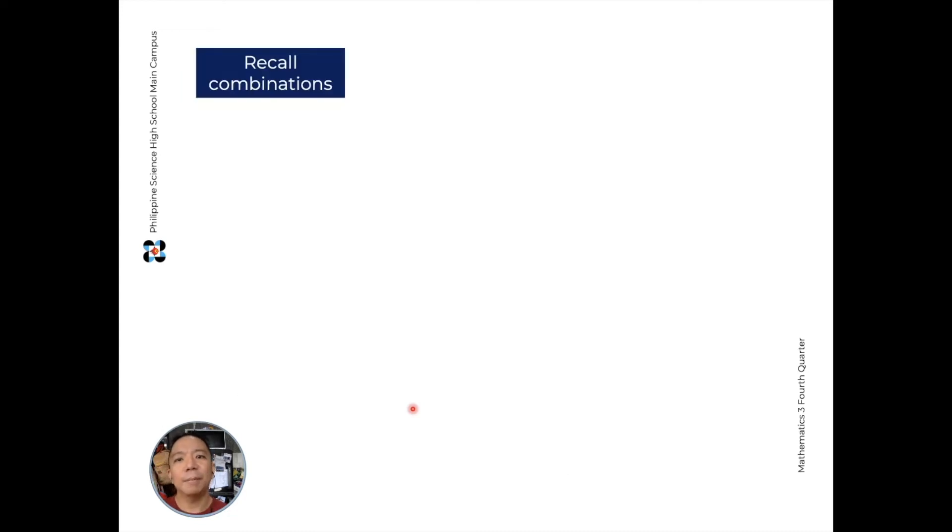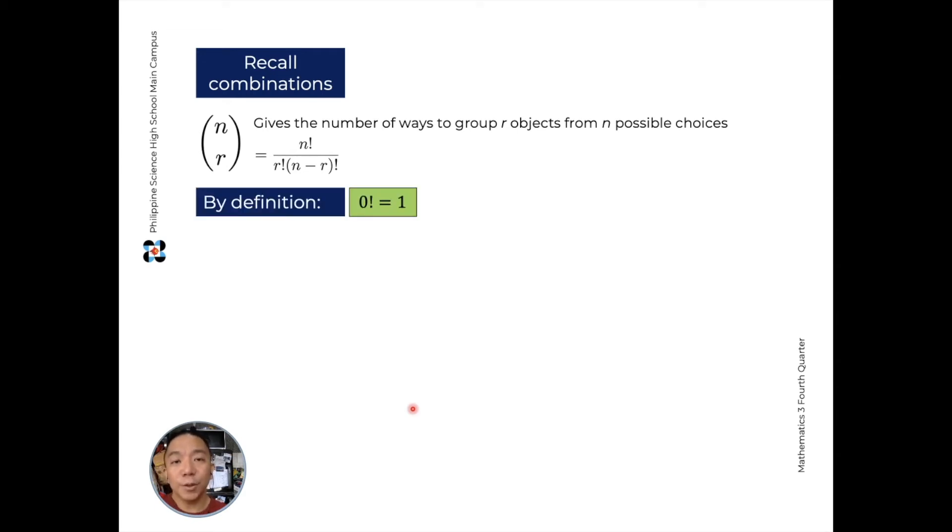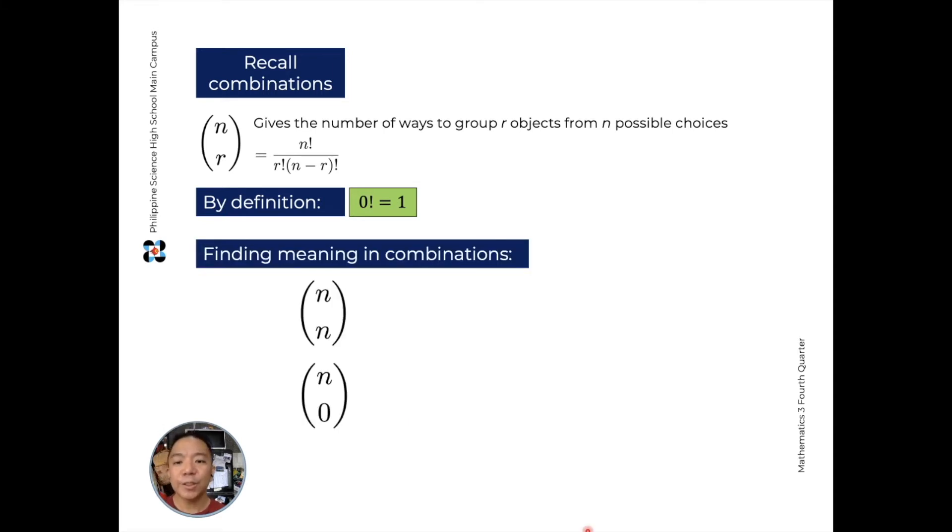So let's dig into the math concepts behind Pascal's Triangle. Let's recall our combinations. n choose r, this gives us the number of ways to group r objects from n possible choices. And the formula is n factorial over r factorial times n minus r factorial. Also, we mentioned before that by definition, 0 factorial is equal to 1. Let's find some meaning in combinations, specifically in n choosing n and n choosing 0.